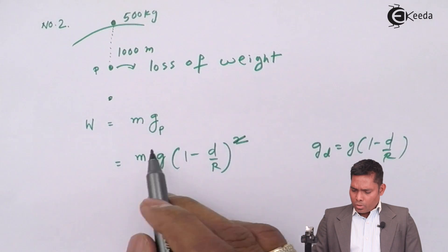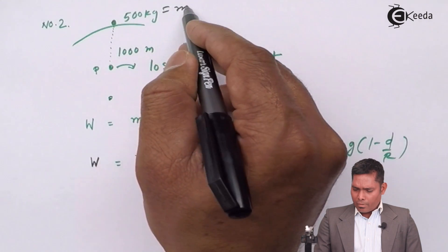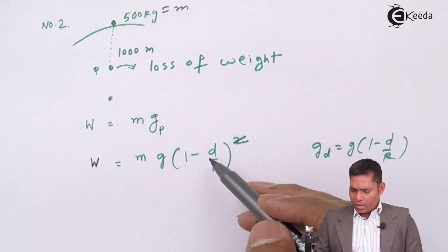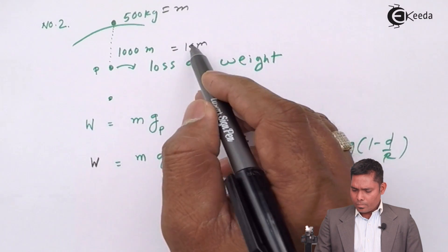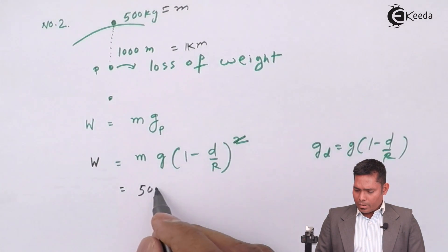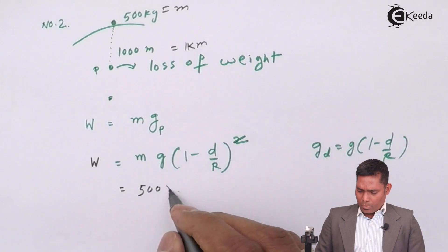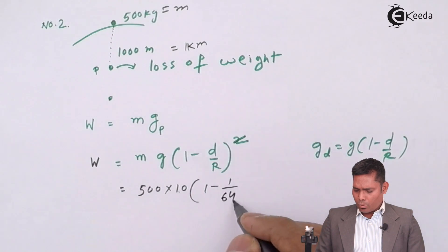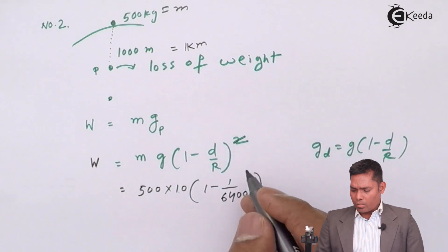Now, if I put the values over here, I will get the value W. Mass is given as 500 kilograms, d is 1000 meters, that is 1 kilometer. So I write 500 kilograms, this g I write as 9.8 or 10, 1 minus 1 over 6400. This is in kilometers, so kilometer cancels out.